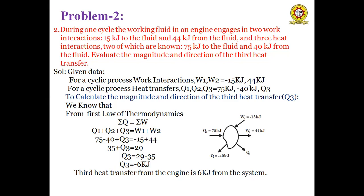There are two work interactions and three heat interactions. For the work interactions: 15 kJ to the fluid means input, so W1 = -15 kJ. Next, 44 kJ from the fluid means work is done by the system, so W2 = +44 kJ.